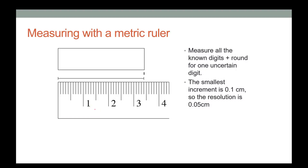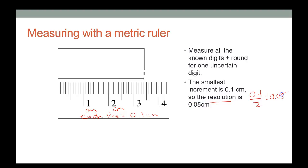On this device, if one centimeter and two centimeters are marked, each line is 0.1 centimeters. To find the resolution, take 0.1 and divide by two: you get 0.05. That means you need a number in the hundredths place for all measurements.